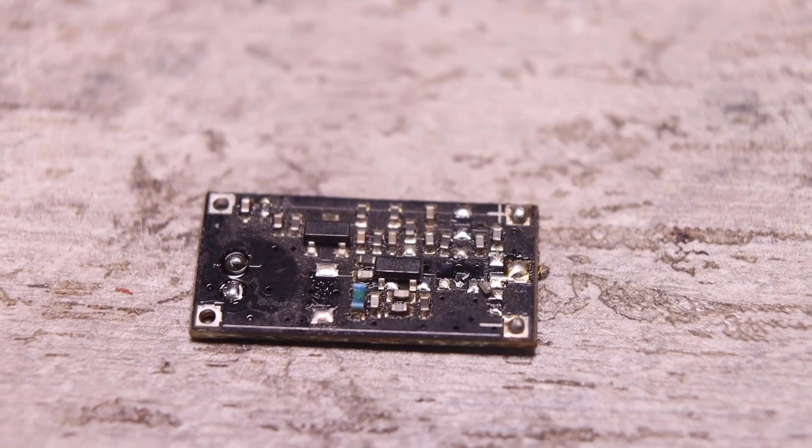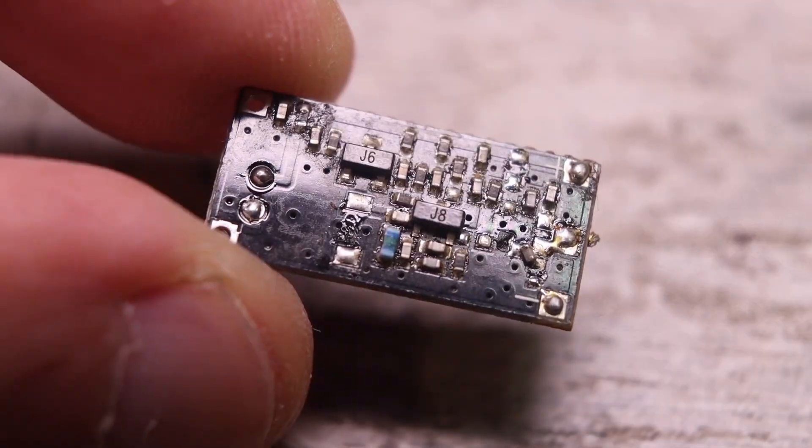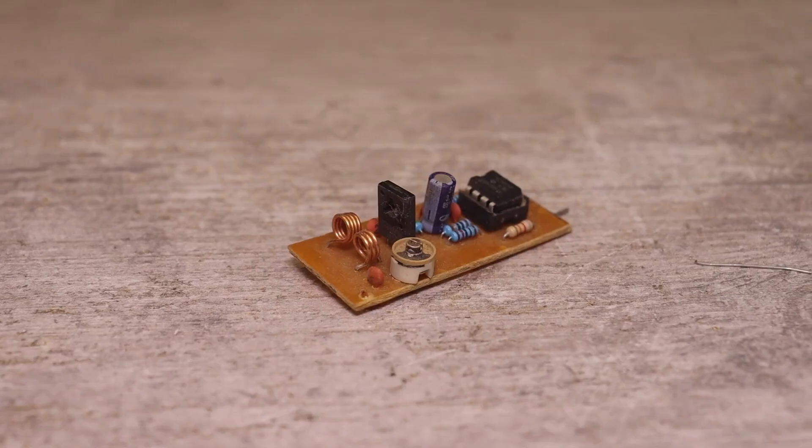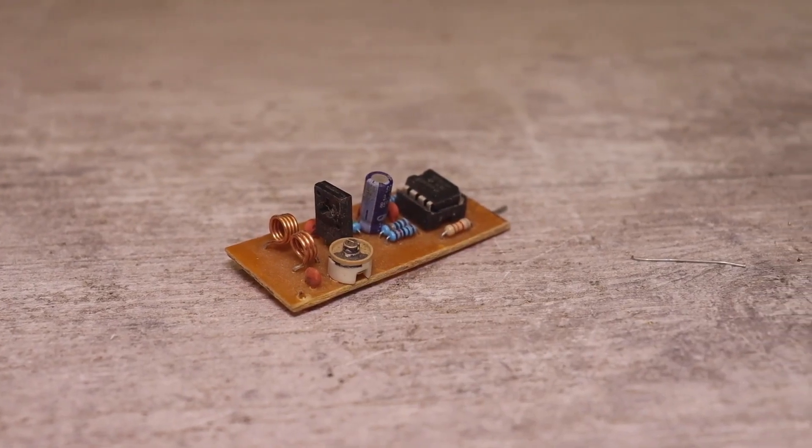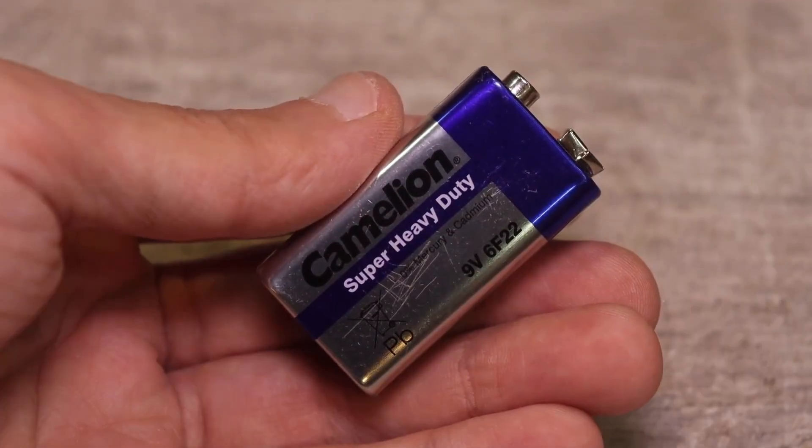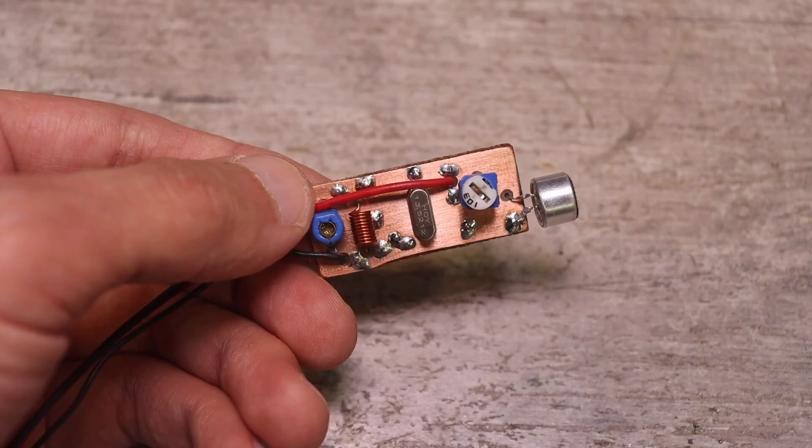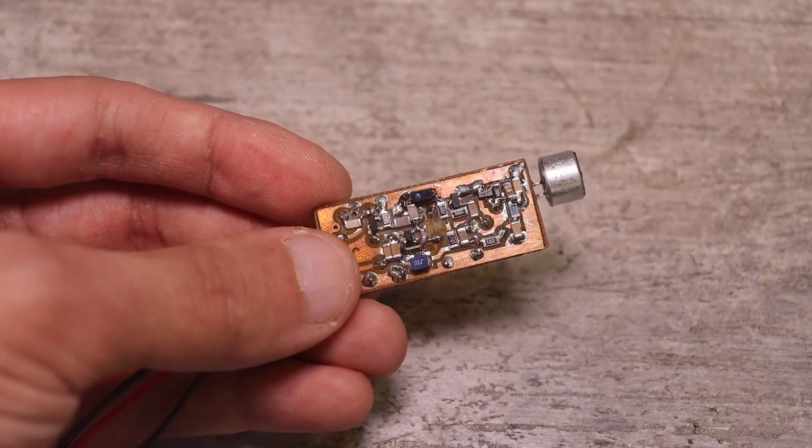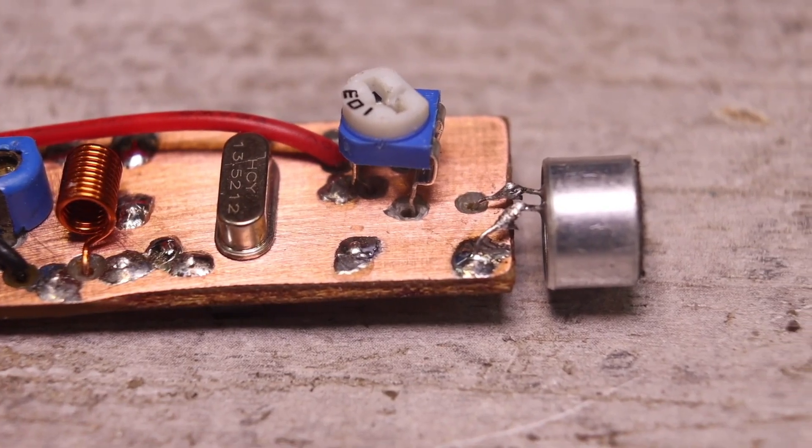All such simple and even quite complex circuits have one significant drawback, which was observed by anyone who assembled them. The frequency is not stable and fluctuates depending on the distance to the receiver, the voltage of the power source, the ambient temperature, etc. But there are more complex circuits that are free of this drawback, transmitters with quartz frequency stabilization.